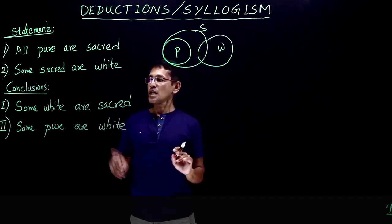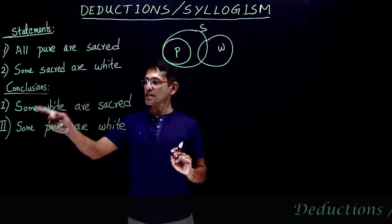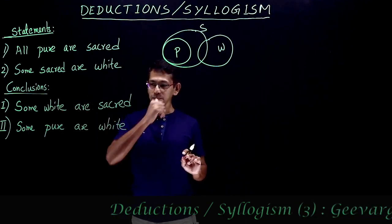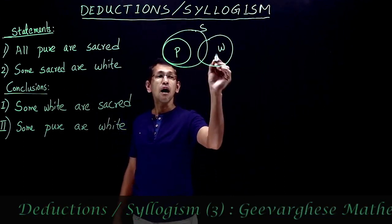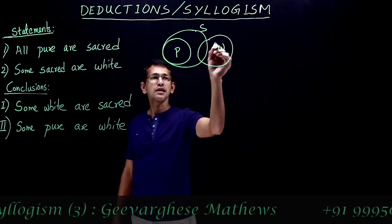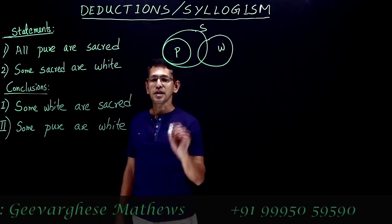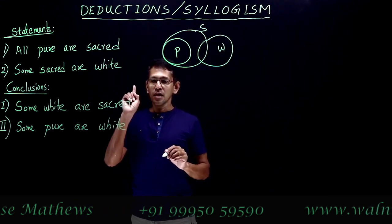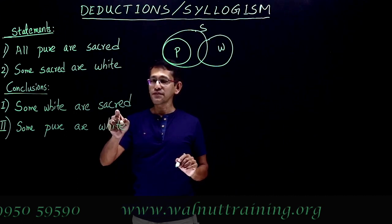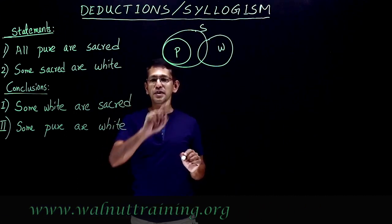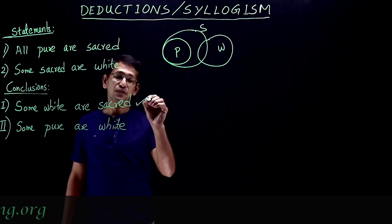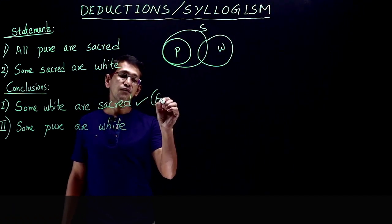The diagram part is completed. Now we look at the conclusions. First conclusion: some white are sacred. The diagram clearly shows that some white are sacred, so the first conclusion is valid for the basic diagram — it is a positive conclusion and it follows the statements.